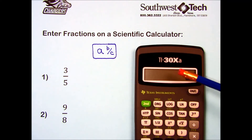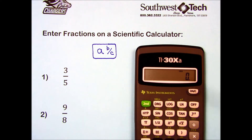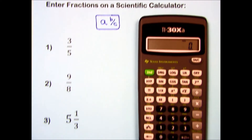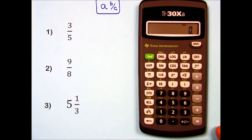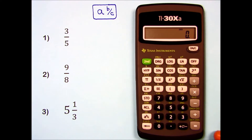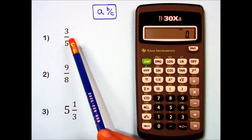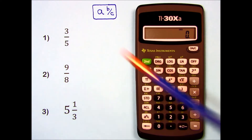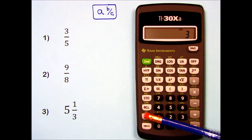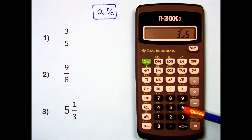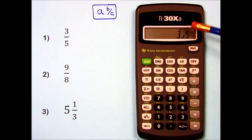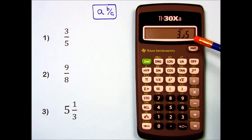First I'll look at the TI-30XA. It has a one-line display. If I would like to enter the fraction 3/5, I press the 3, the fraction key, and then the 5. It uses a little crooked line to indicate where a fraction line would be, and if I press equals it stays the same.